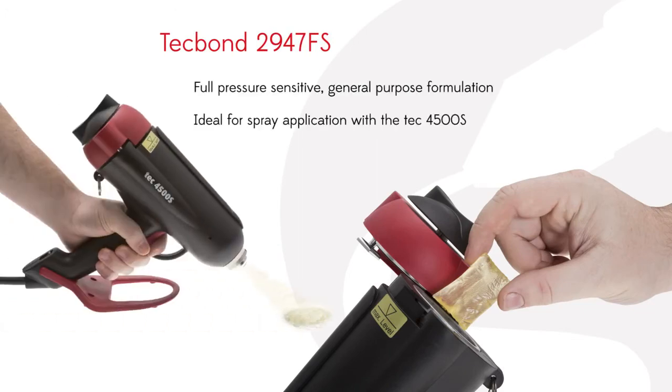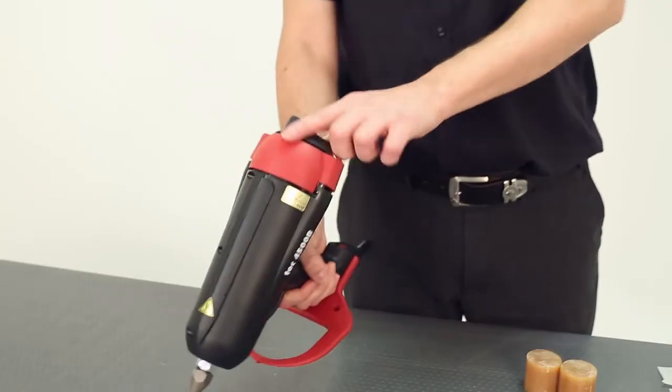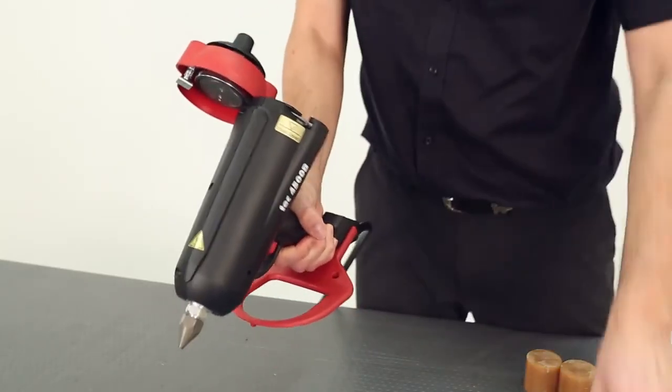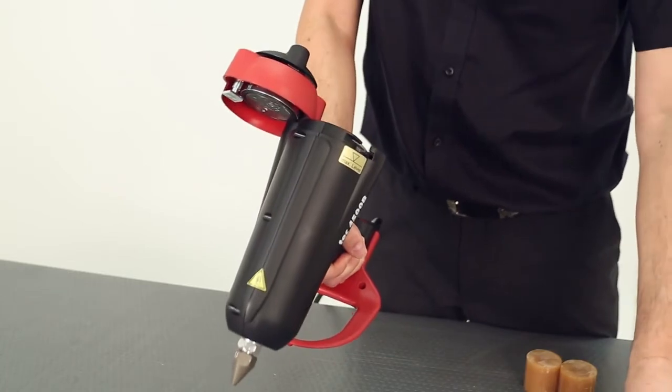The second adhesive is TEC BOND 2947FS, which is a full pressure-sensitive general-purpose formulation. Both of these glues come in pillow shape and are supplied in 10kg cartons.